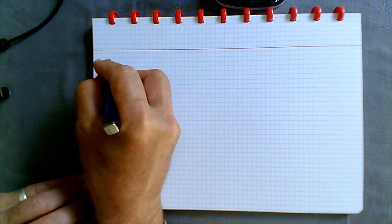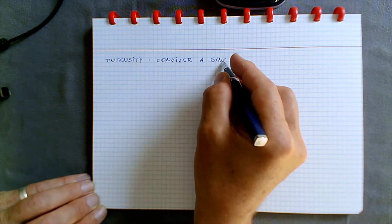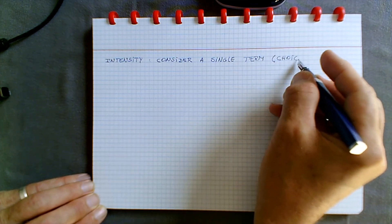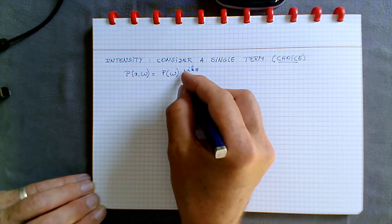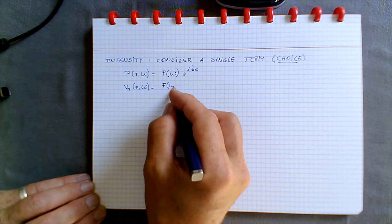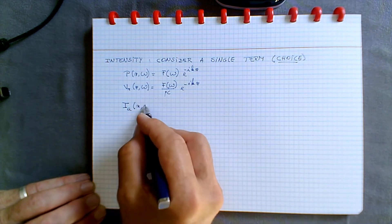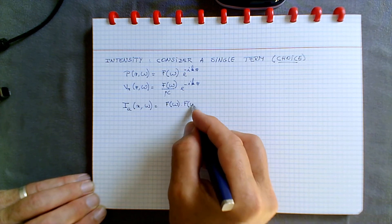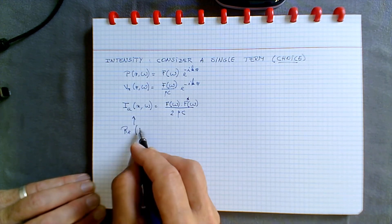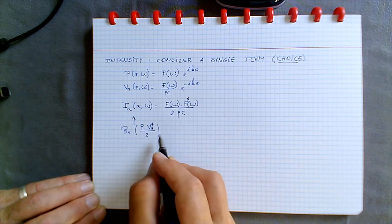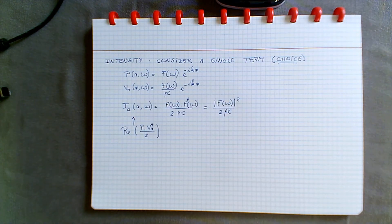To calculate the intensity, we consider a single forward propagating wave. The pressure is F exponential minus ikx and the velocity is F over rho c times exponential minus ikx. The active intensity, which is the real part of p times v* divided by two, equals F times F* divided by two rho c, because the complex exponential terms cancel. So the active intensity of a purely forward propagating plane wave is the square of the amplitude of F(omega) divided by two rho c.